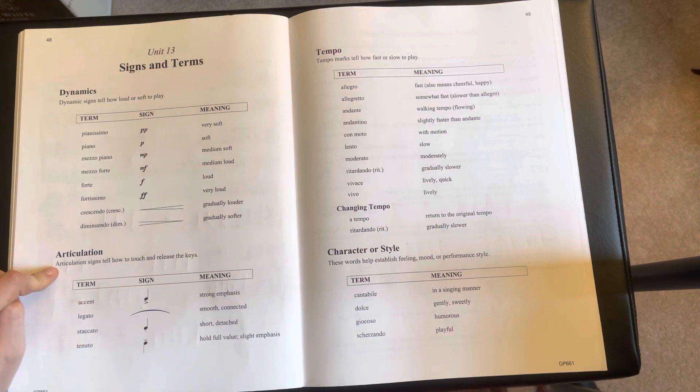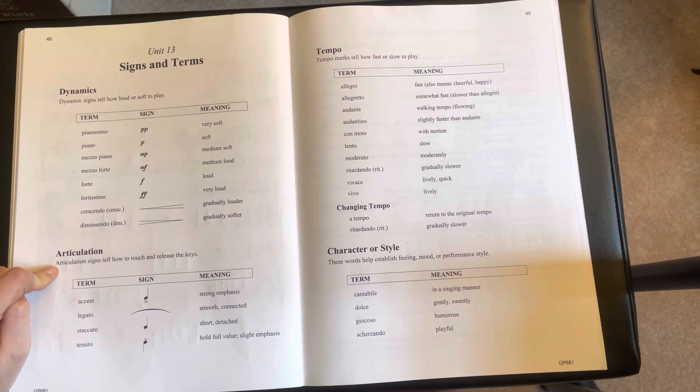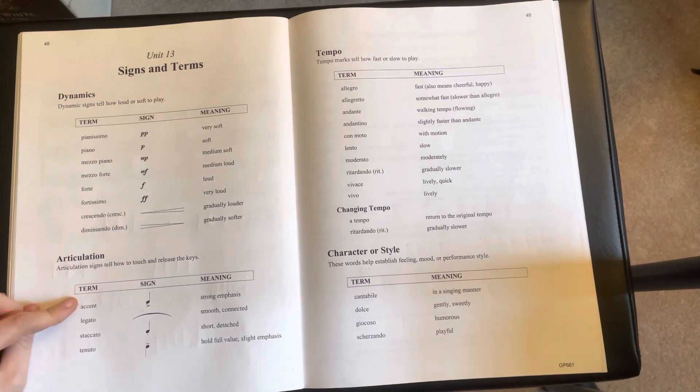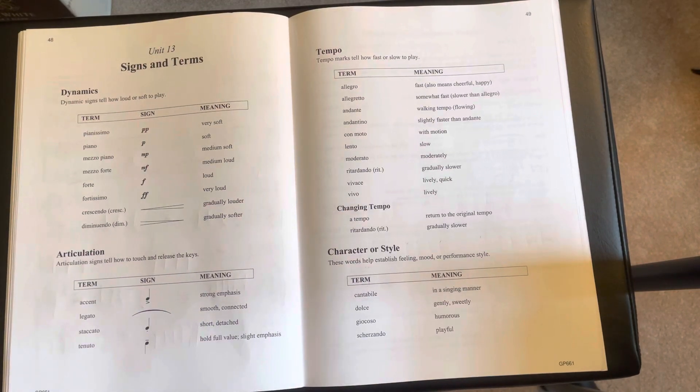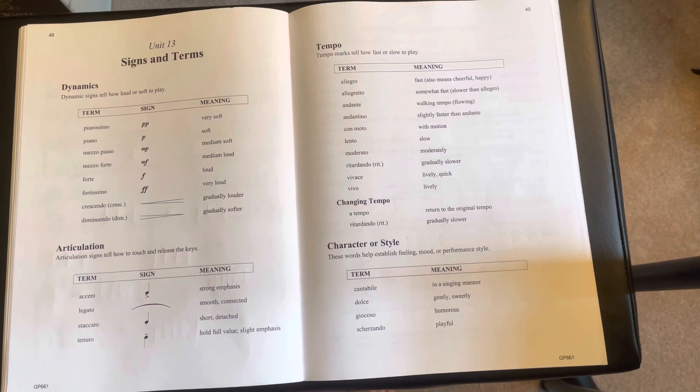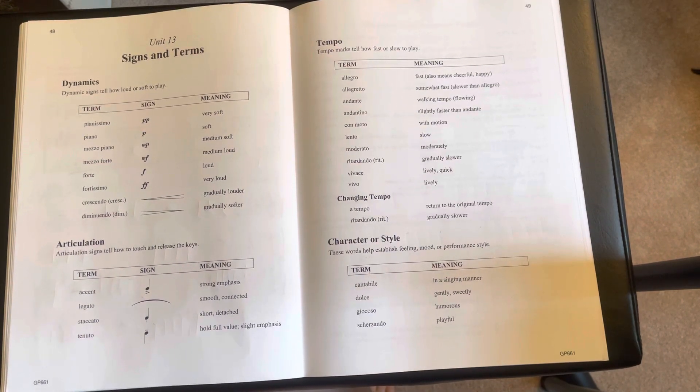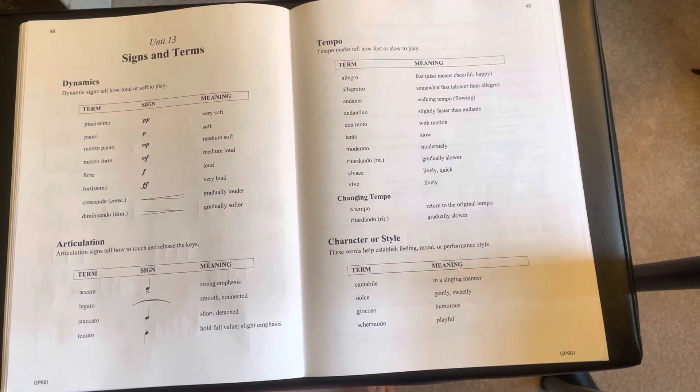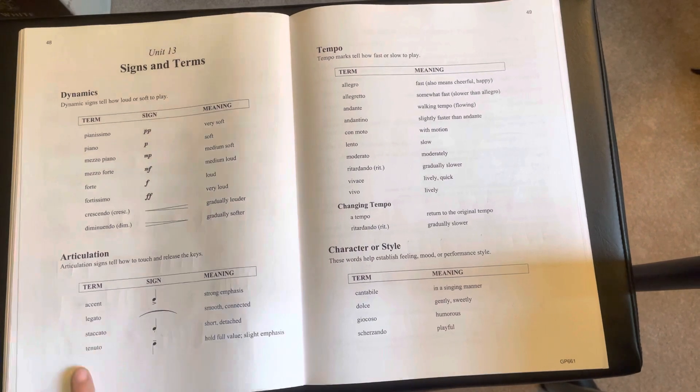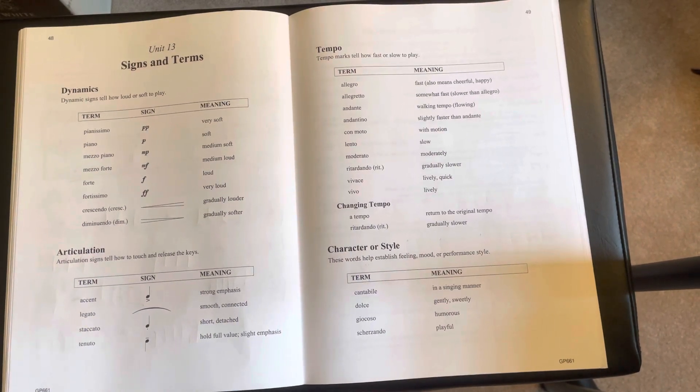Our articulations refer to how we touch and release the keys, or how we place emphasis on the notes. So an accent, strong emphasis, legato, smooth and connected, staccato, short and detached, and tenuto, hold for the full value with slight emphasis. And I always compare legato and tenuto, meaning the same.